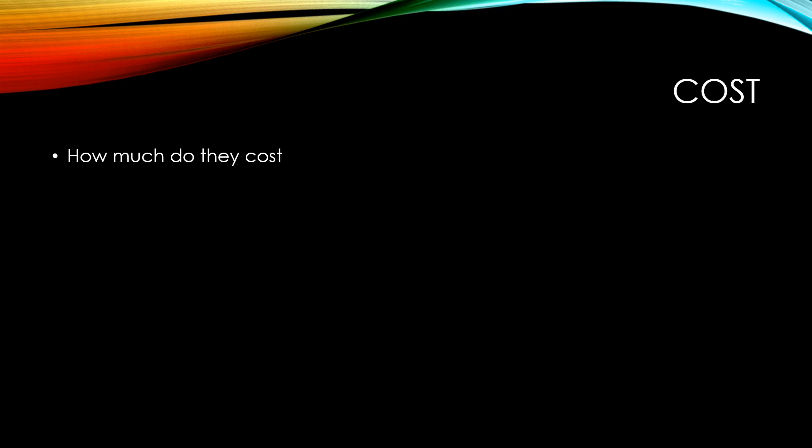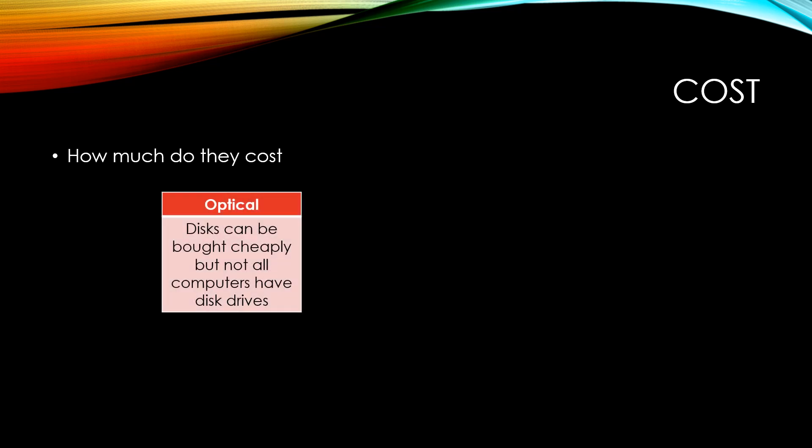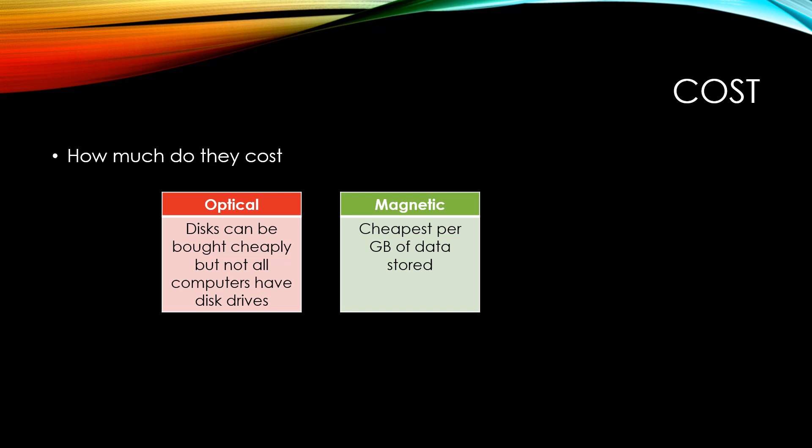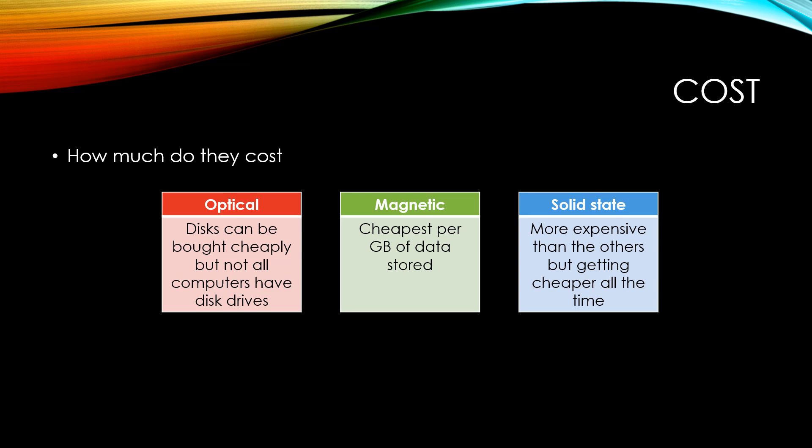Cost refers to how much a storage medium costs per gigabyte. Optical storage can be bought cheaply but not all computers these days have disk drives to use it. Magnetic storage is the cheapest per gigabyte of data stored. Solid state storage is more expensive than the others but it's getting cheaper all the time. In 2013 it would have cost about 4 US cents per gigabyte of magnetic hard drive space, while solid state storage cost 69 US cents per gigabyte. By 2023, just 10 years later, magnetic disk storage costs 1 cent US per gigabyte and solid state storage just 2.5 cents per gigabyte.